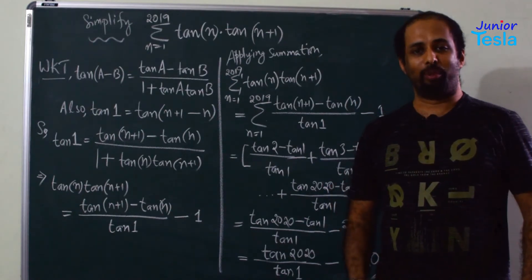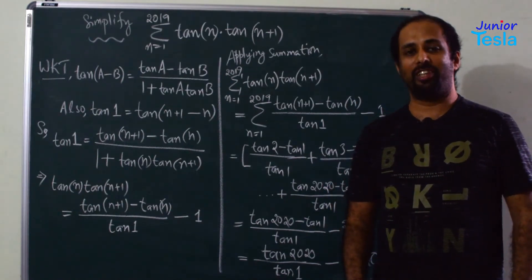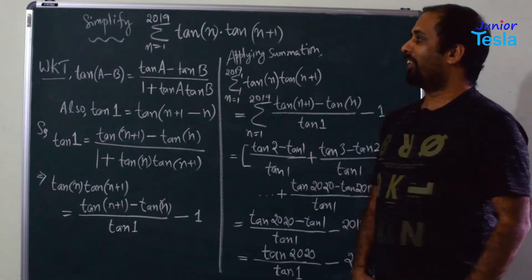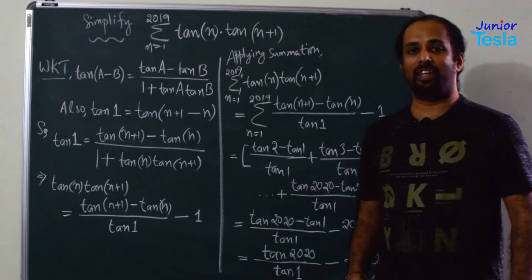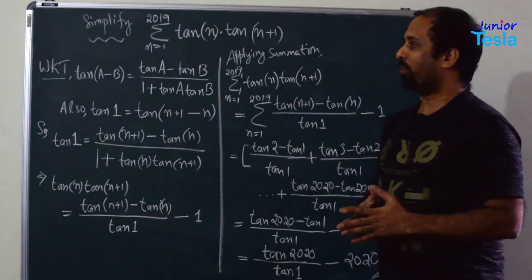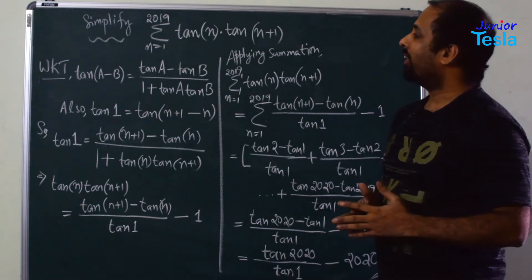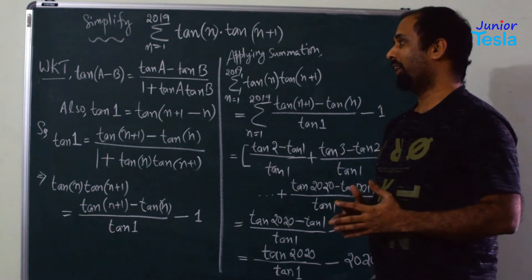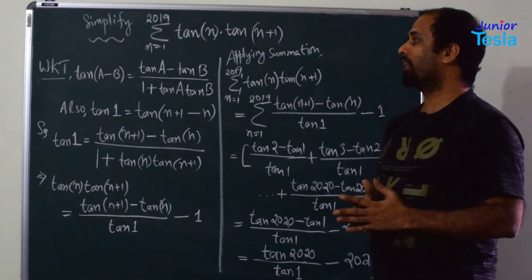Namaste. Welcome to Olympiad Corner. In today's session, we are going to see a trigonometry problem. It is trigonometry as well as algebra, because we are dealing with summation. The problem goes like this: simplify the summation of tan(n) · tan(n+1), where n is equal to 1 to 2019.